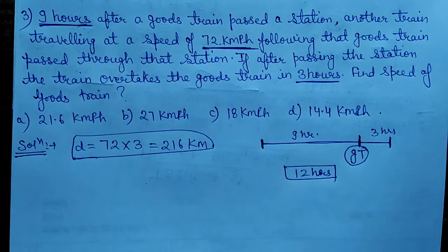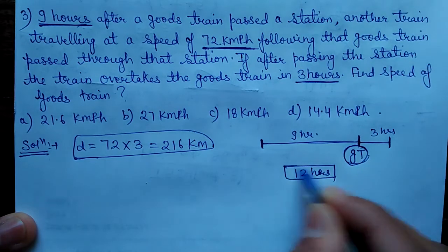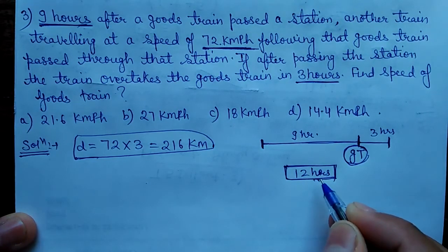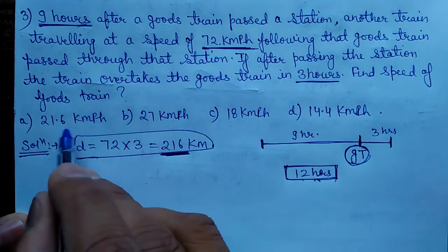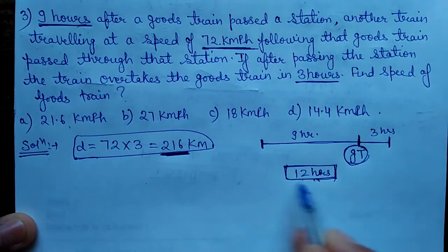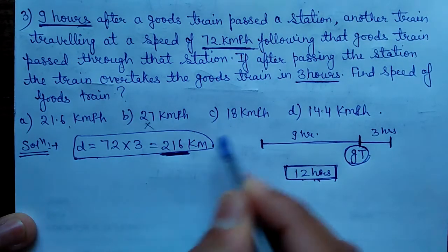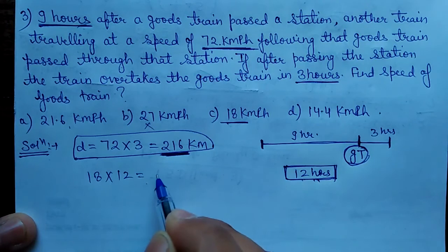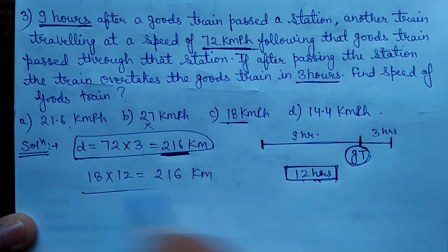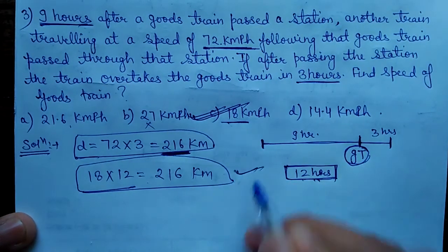The best approach to solve this type of question is the option method — check by the options. The goods train has travelled for 12 hours and must cover the same distance of 216 km. So multiply each option's speed by 12 and see which gives 216. Option 18 × 12 = 216. That means option C is our answer. This is the best method to solve these types of questions.